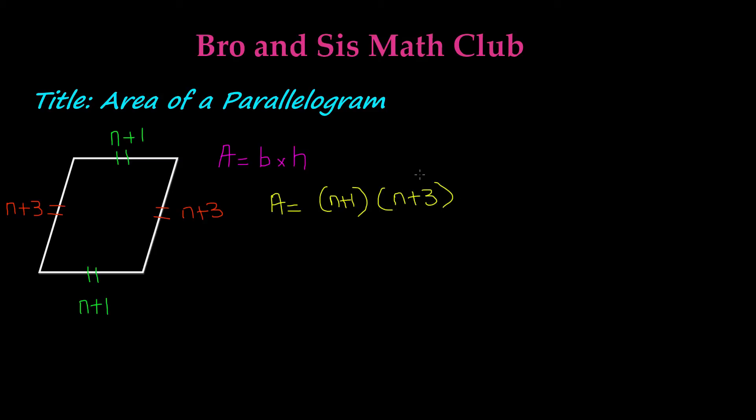Let's say that the value of n is given as 4. So we have to put 4 as a substitution for the variable n. When we do that, we get A is equal to n is 4, plus 1, multiplied by 4 plus 3.